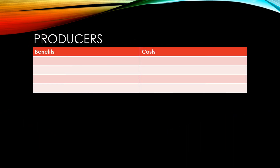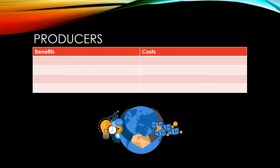Let's start by taking a look at the benefits to producers. The first and probably biggest benefit is that they have more markets in which to sell their products. With more customers to sell to, they're able to increase the size of their business and take advantage of economies of scale to reduce their costs. Producers may also benefit from better quality or cheaper imports to their production processes, as they will be getting more specialised products due to globalisation forcing all countries to specialise.